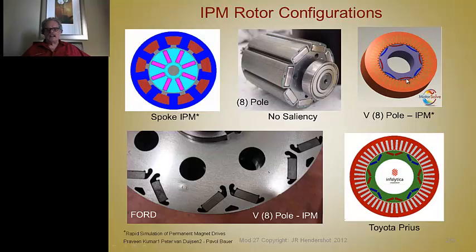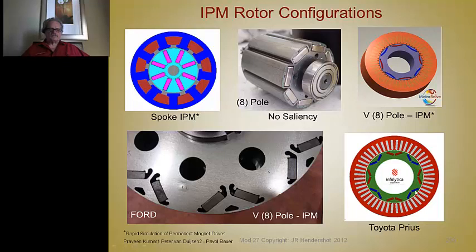Here is an eight-pole version, which happens to be the Toyota Prius configuration. The magnets are shaped in a V to provide enough surface area for sufficient flux, with salient poles in between. The V-shape gives greater magnet surface area than a flat arrangement, and creates saliency between the quadrature axis and the D-axis.